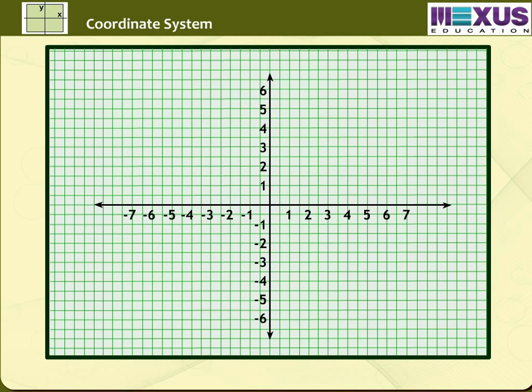Now after learning about graph and Cartesian plane and axes, let us learn the coordinate system. Let X-OX and Y-OY be the two number lines intersecting each other perpendicularly at O. They will divide the whole plane of the paper into four parts which we call quadrants.